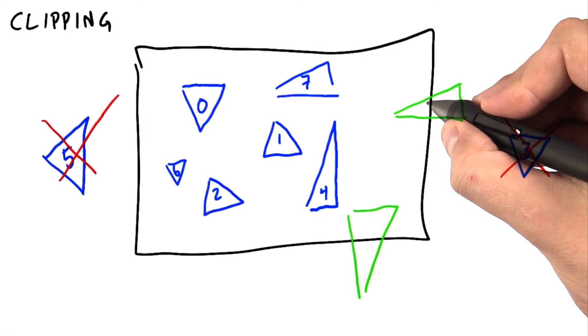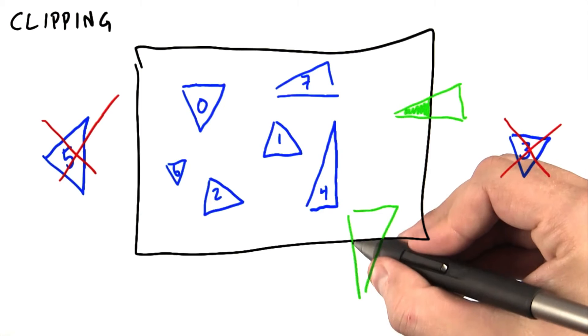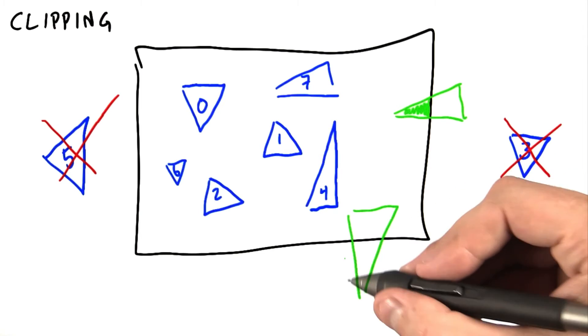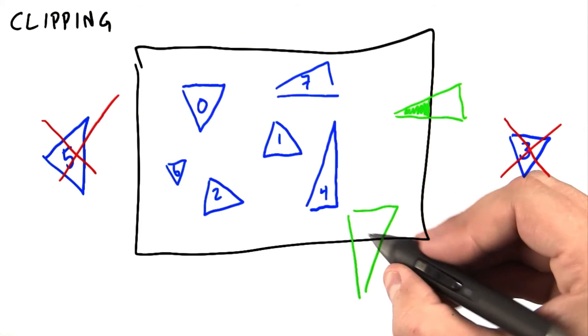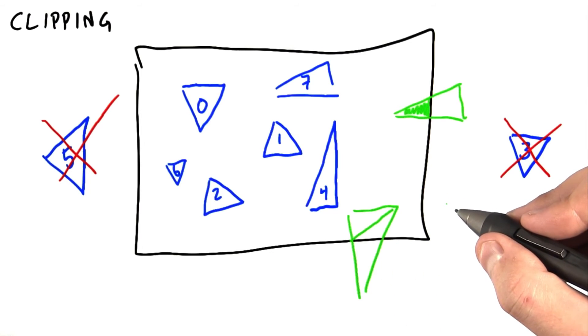So for this triangle, for instance, we're going to convert it to this triangle right here. This triangle has left behind a trapezoid and so we only want to deal with triangles. So instead we triangulate this trapezoid and send two triangles down the pipe.